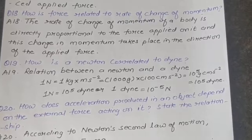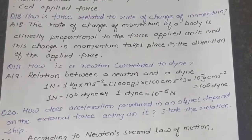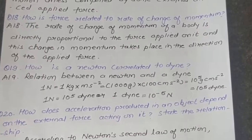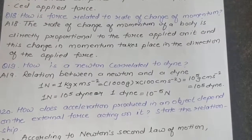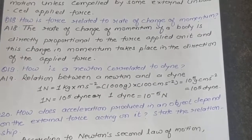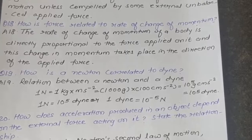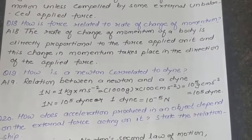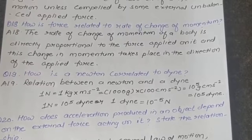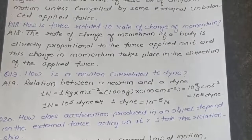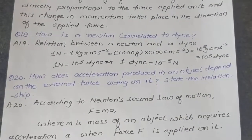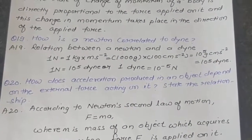Question 19: How is a Newton correlated to a dyne? The relationship between a Newton and a dyne is: 1 Newton = 1 kg·m/s² = 1000 g × 100 cm/s² = 10⁵ dyne. Therefore, 1 Newton = 10⁵ dyne, or equivalently 1 dyne = 10⁻⁵ Newton.